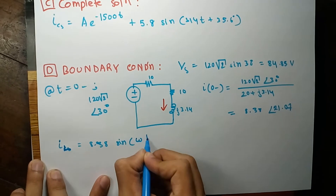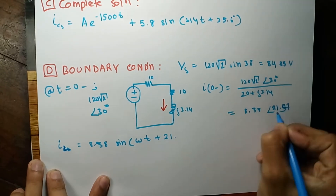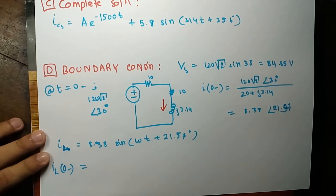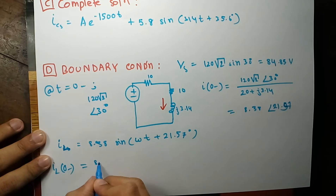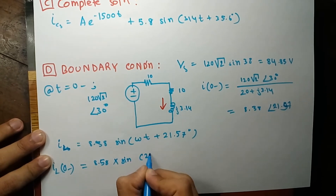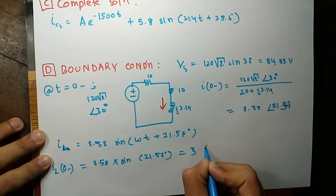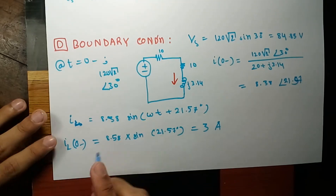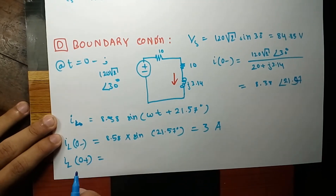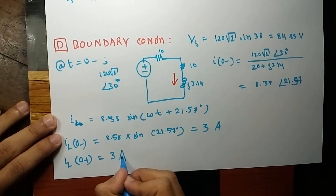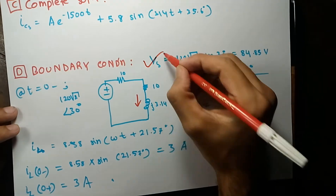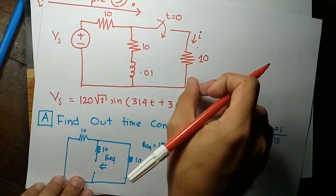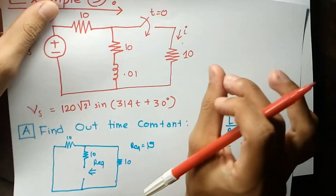So the equation governing the inductor current before t equals 0 is 8.38 sin(ωt + 21.57°). To find the current at t equals 0 minus we put t equals 0, giving 8.38 × sin(21.57°), which turns out to be 3 amps. Now, the current through an inductor cannot change abruptly, so the current through the inductor just after switching is also 3 amps. This will be important to evaluate our initial condition — the current through this branch at t equals 0.